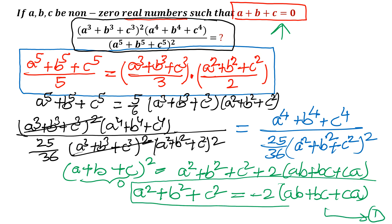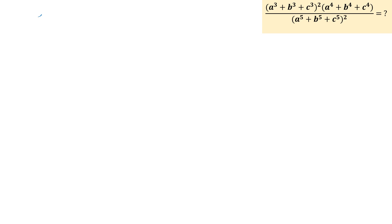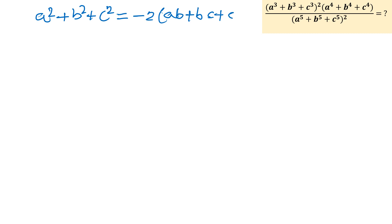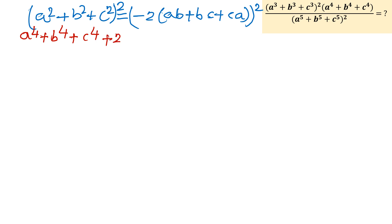I will use this result directly in the next calculation. Now I will take the whole square of this equation. So A squared plus B squared plus C squared equals minus 2 times AB plus BC plus CA, whole square. Applying A plus B plus C whole square on the left side: A to the power 4 plus B to the power 4 plus C to the power 4 plus 2 times A squared B squared plus B squared C squared plus C squared A squared. The right-hand side becomes 4 times AB plus BC plus CA, whole square.